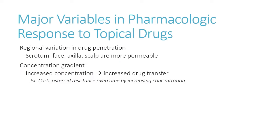What are some major variables here? How can you decide what kind of effects we're going to get from the medications that we're applying to the skin? In some cases we're giving drugs and applying them to the skin just to work locally — but does that mean the drugs only work locally? No. Some drugs can be absorbed systemically, and that can actually be a good thing for certain drugs. For instance, has anyone ever heard of Duragesic or a fentanyl patch?